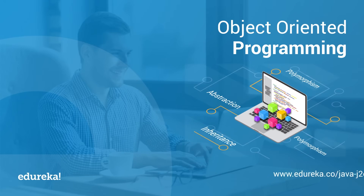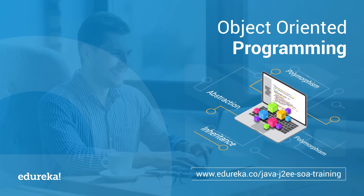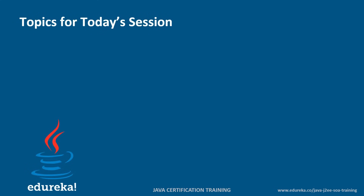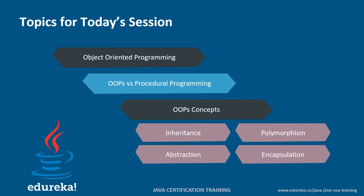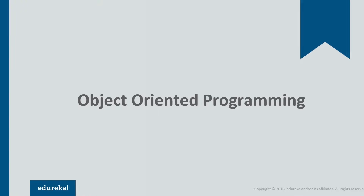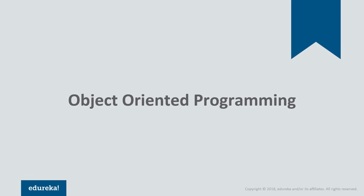Hello friends, welcome to Edureka. This is Ishant, and today's session we're going to cover object-oriented programming structure in Java. We'll see what is object-oriented programming, how it's different from the procedural approach, and what are the various fundamentals available — the four main pillars: inheritance, abstraction, polymorphism, and encapsulation.